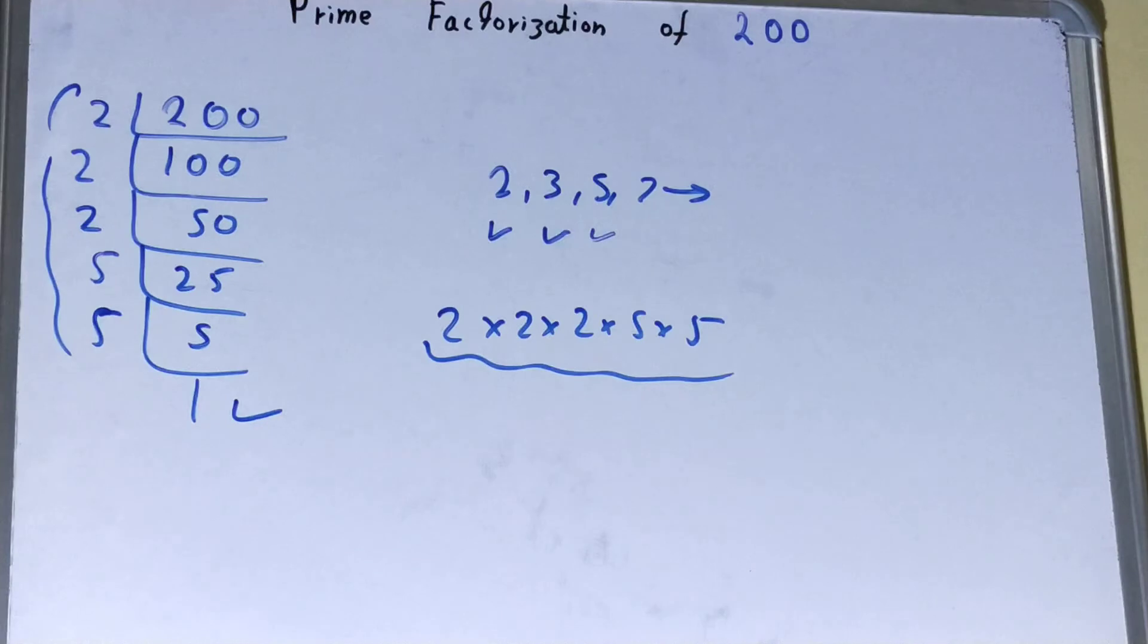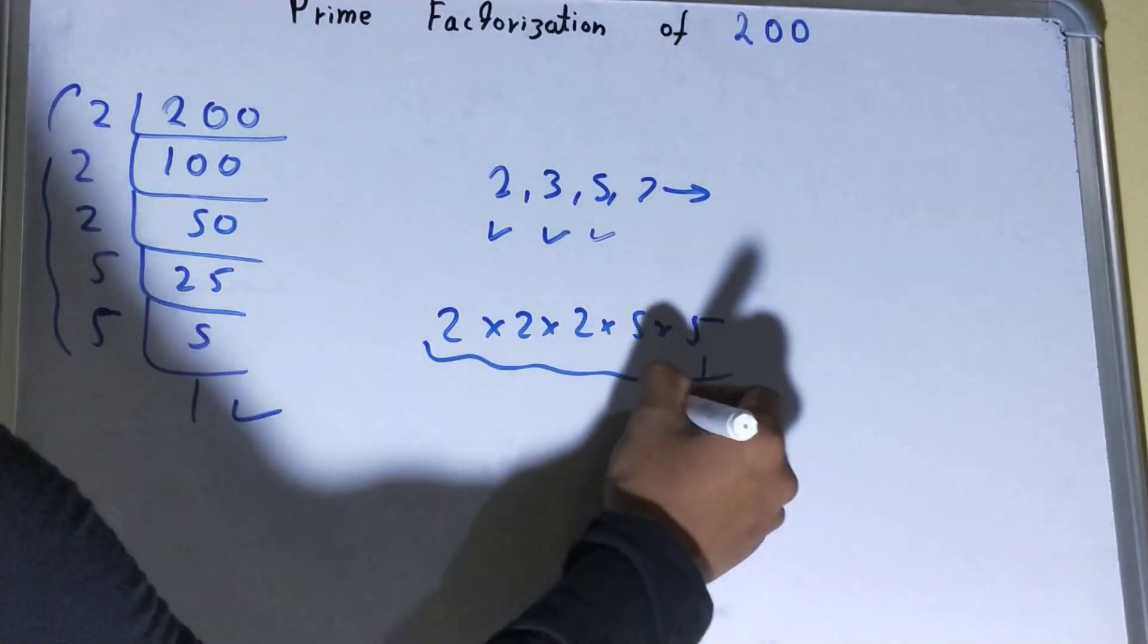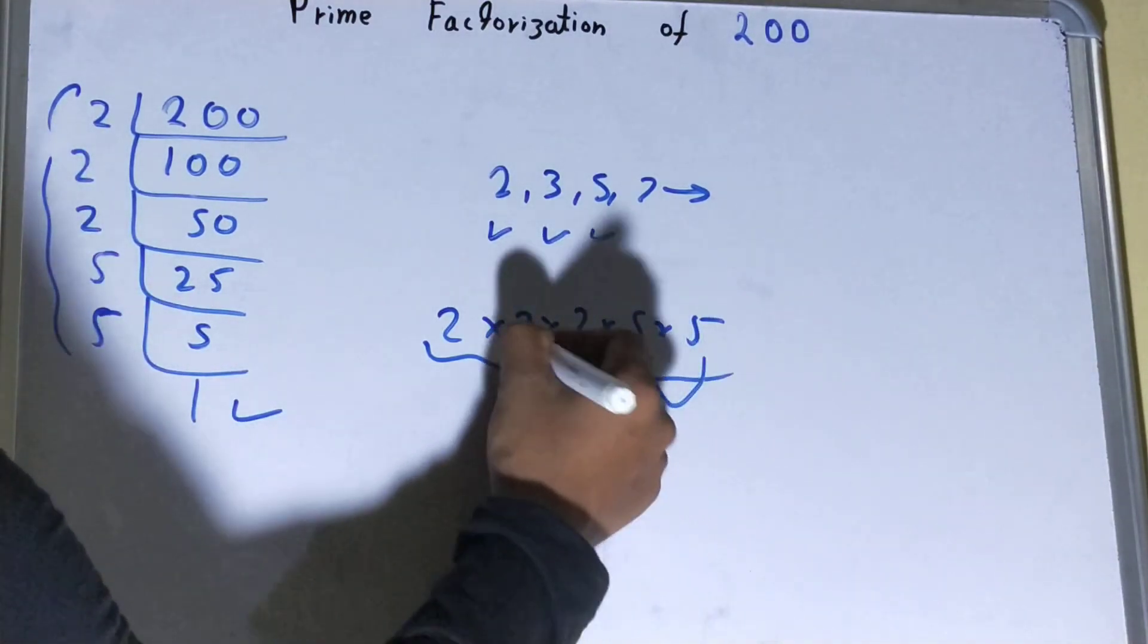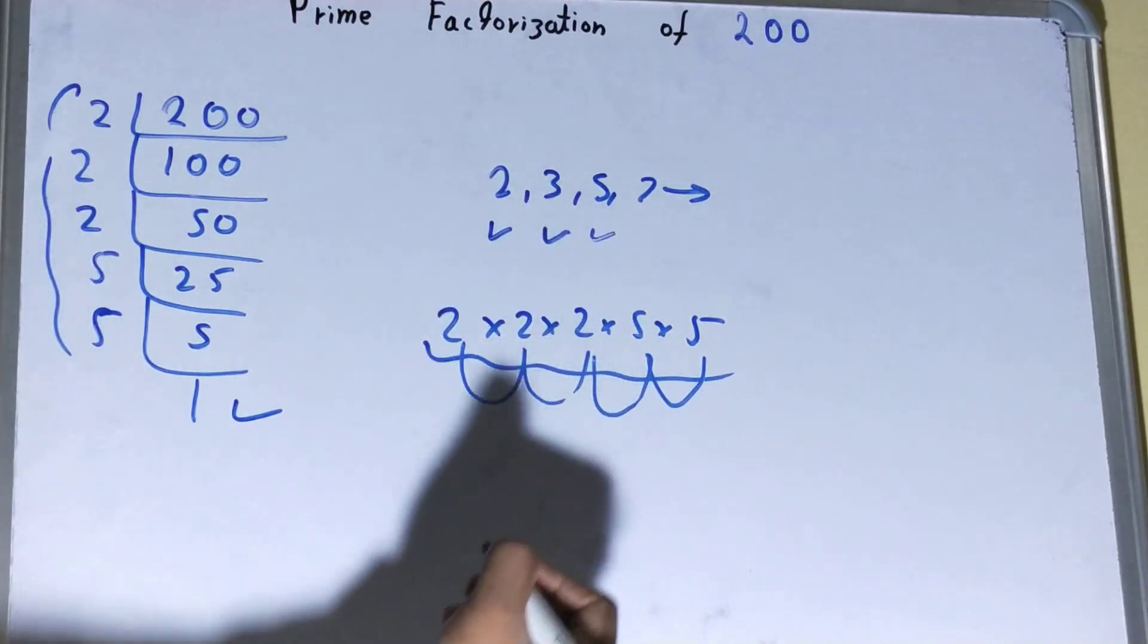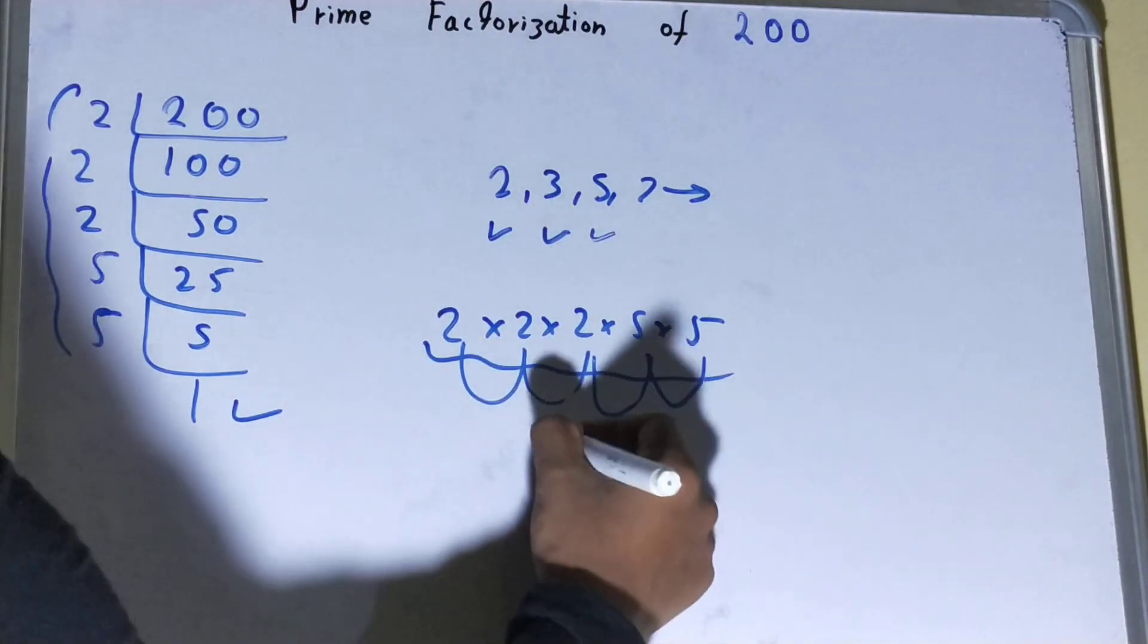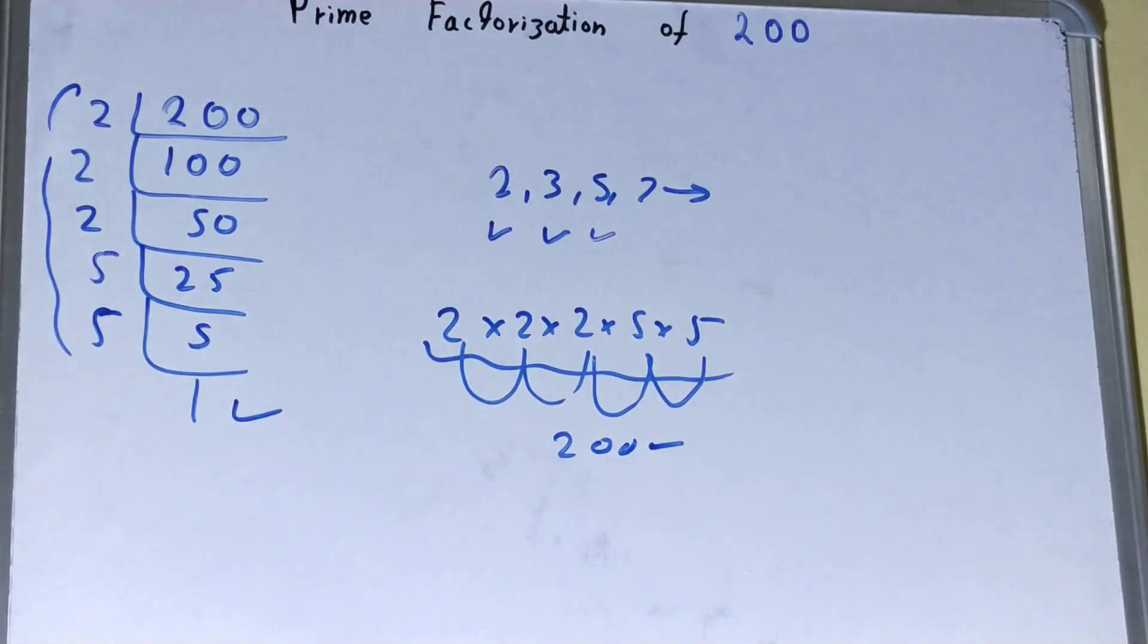If you want to check whether it is right or not you can multiply them. 5 into 5 is 25, times 2 is 50, times 2 is 100, times 2 is 200. So you are getting the number back again. If you are getting the number back again your calculation is fully correct. If you are not getting it then you need to recheck.